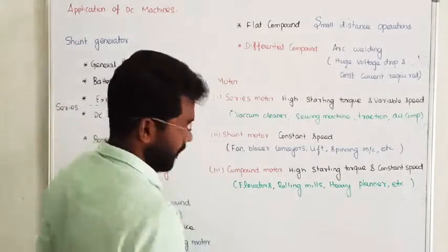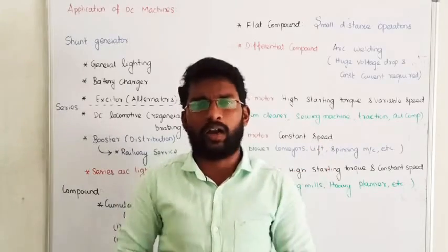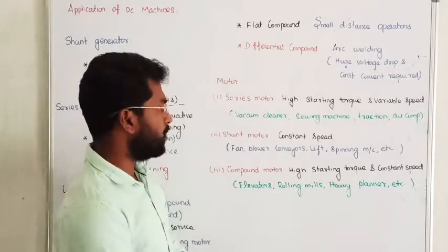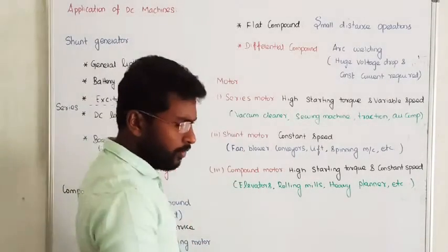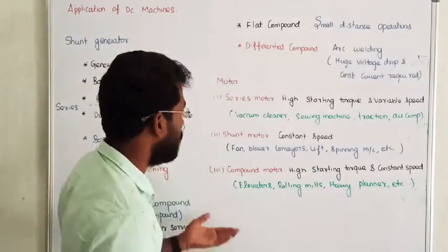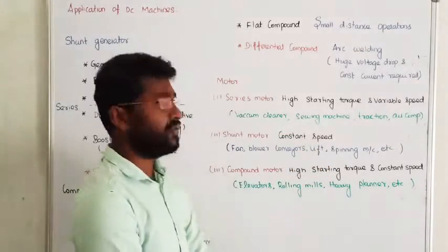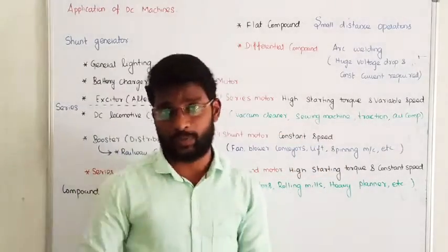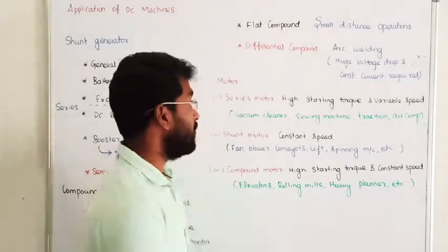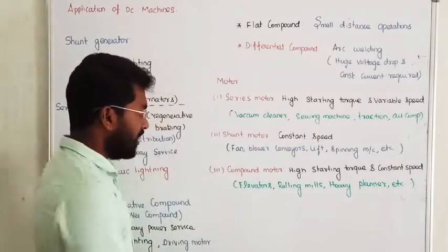Next, we discuss the shunt motor. The shunt motor provides constant flux, or we can say constant speed. Speed on constant torque is provided by the shunt motor. Shunt motors are usually used for constant speed applications such as fans, blowers, conveyor belts, lifts, and spinning machines. However, the problem with the shunt motor is that starting torque is not very high.